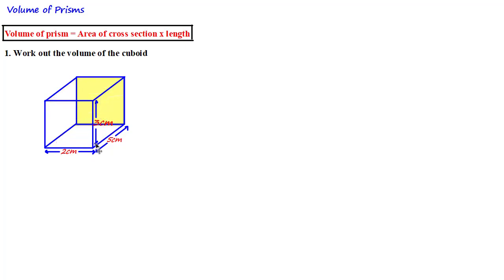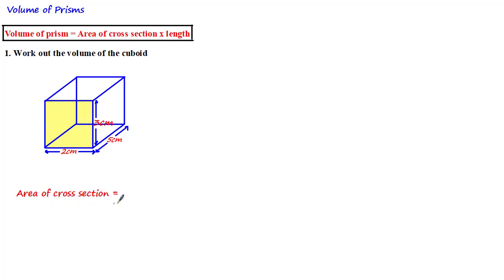In this case the length would be five centimeters because the length between the front face we chose and the opposite parallel face is five centimeters. So to find the volume of this cuboid we need to find the area of the cross-section, and as it's a rectangle it would be equal to the length times by the width — two times by three — which is equal to six centimeters squared.